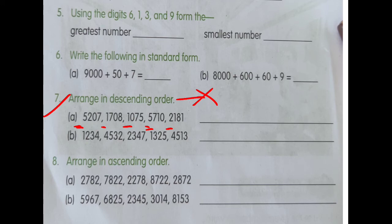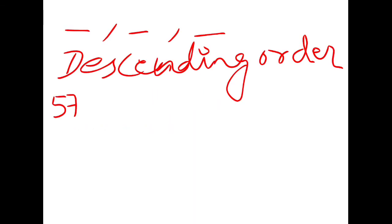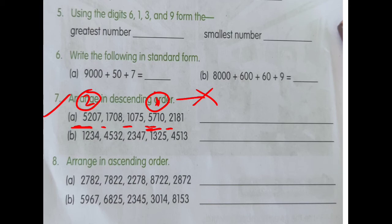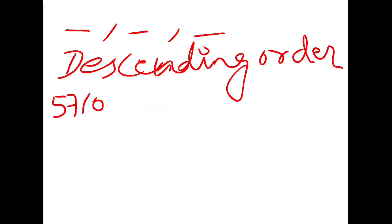So the first number in descending order is 5,710. We write 5,710 first. Next, since the leftmost digit is still 5, the next number must be 5,207. We write the greater-than symbol between them to show we are writing in descending order — meaning 5,710 is greater than 5,207.